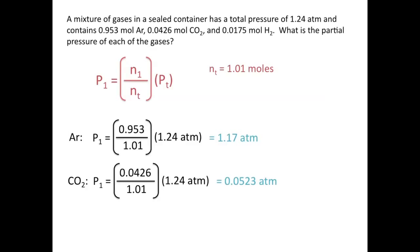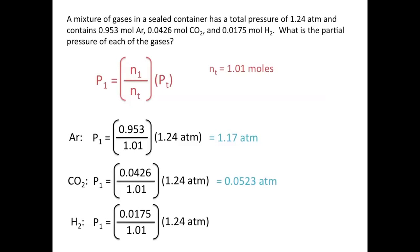For H2, the mole fraction is the number of moles of H2, 0.0175, divided by the total number of moles, 1.01, multiplied by the total pressure, 1.24 atmospheres. This tells us that the partial pressure of H2 is 0.0215 atmospheres.